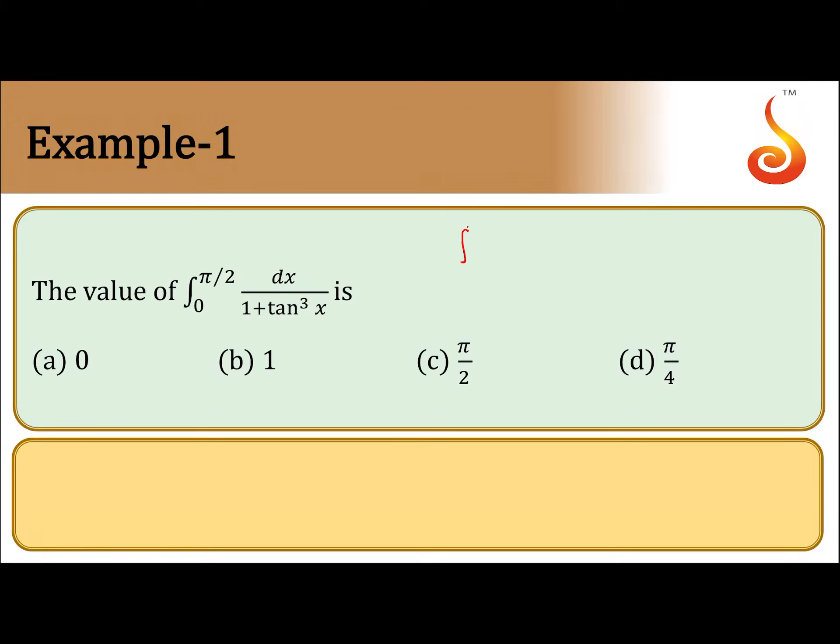Convert into sin and cos first. So this question becomes 0 to pi by 2. This will become cos cube x dx by sin cube x plus cos cube x, which is equal to I.